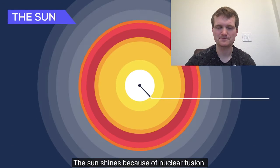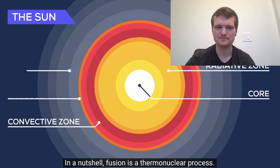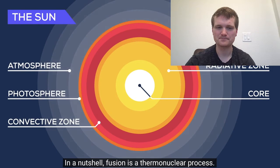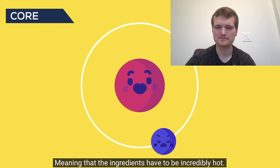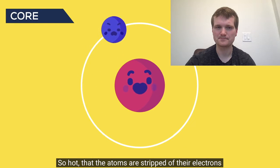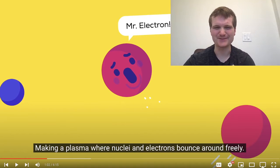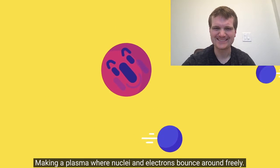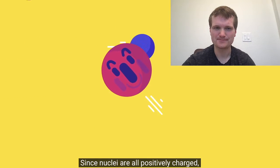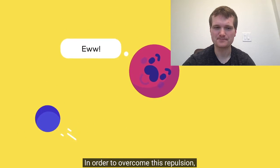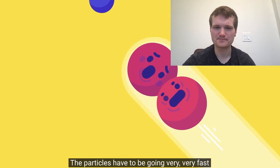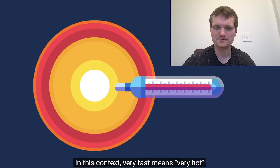The sun shines because of nuclear fusion. In a nutshell, fusion is a thermonuclear process, meaning that the ingredients have to be incredibly hot, so hot that the atoms are stripped of their electrons, making a plasma where nuclei and electrons bounce around freely. Since nuclei are all positively charged, they repel each other. In order to overcome this repulsion, the particles have to be going very, very fast. In this context, very fast means very hot. Millions of degrees.